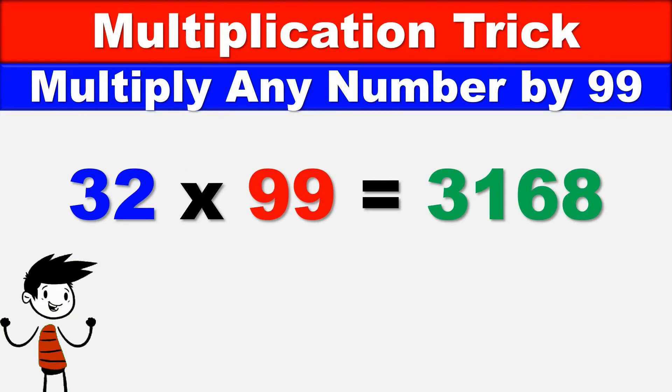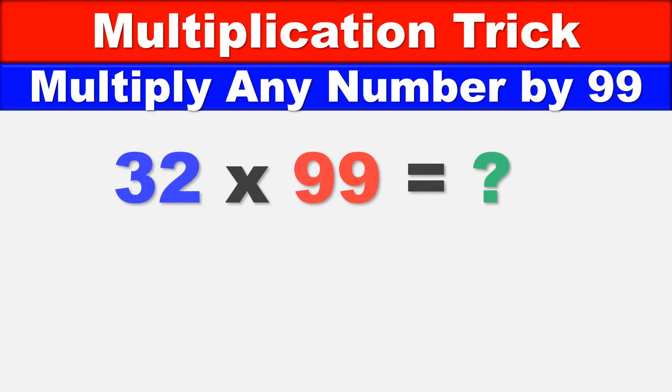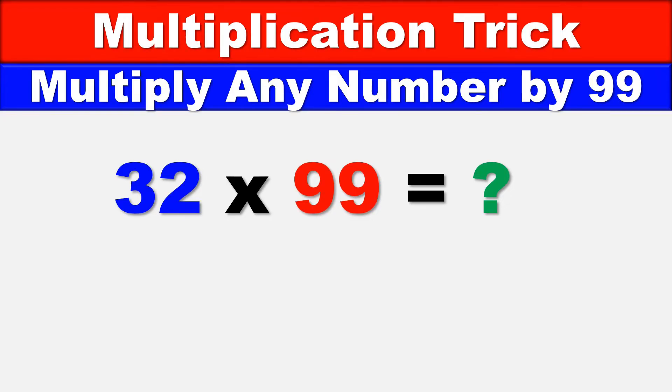Let's figure out how to do this trick. Let's take a look at our first example: 32 times 99. The first part of this trick is to just subtract the number by 1, so 32 becomes 31, and that is literally the first part of our answer. We're halfway there. The second part is this Vedic math trick.